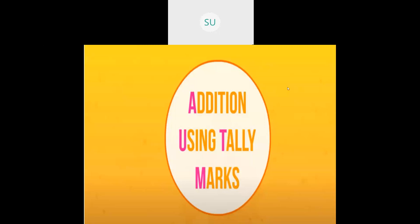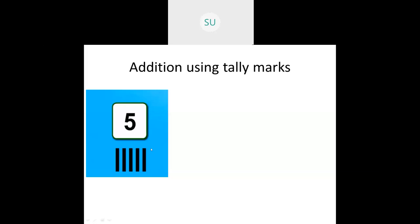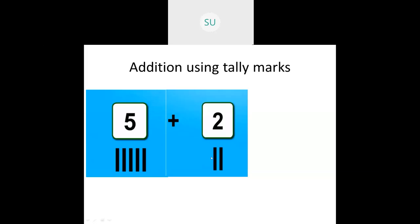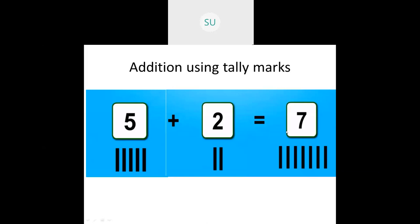Then we saw another method: addition using tally marks. Tally marks are lines you draw to represent numbers. For five plus two: draw five tallies, then draw two more tallies. Now count all the tallies: one, two, three, four, five, six, seven. So five plus two is equal to seven.